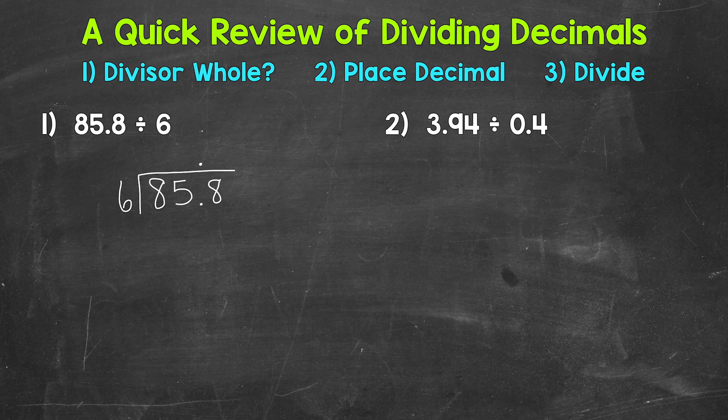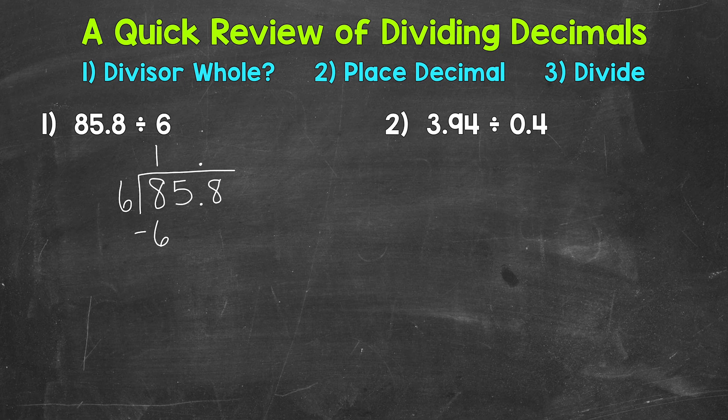So let's start with divide. So we have 8 divided by 6. How many whole groups of 6 are in 8? Well 1. Then we multiply, 1 times 6 is 6, subtract, 8 minus 6 is 2, and then we bring down.